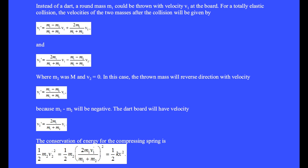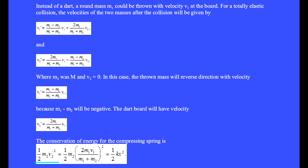For a totally elastic collision instead, a round mass M1 thrown at velocity V1 at the stationary board M2 will have final velocities given by the elastic formulas. The thrown mass reverses direction because M1 minus M2 is negative in the numerator. The dart board has velocity V2-prime equals 2M1 over (M1 plus M2) times V1. The conservation of energy for the compressing spring is that the initial kinetic energy of the board, one-half M2 V2-prime-squared, equals the stored elastic potential energy one-half k x-squared, where x is the maximum compression and the board's velocity is momentarily zero.